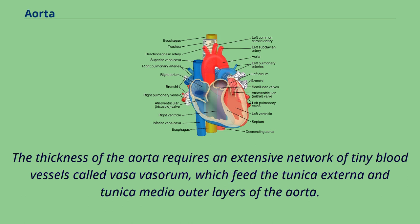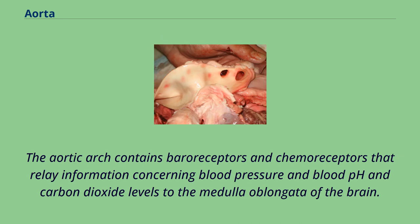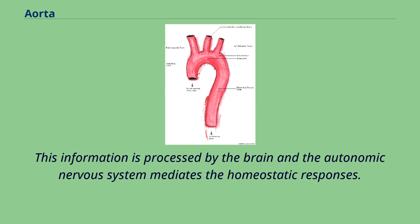The aortic arch contains baroreceptors and chemoreceptors that relay information concerning blood pressure and blood pH and carbon dioxide levels to the medulla oblongata of the brain. This information is processed by the brain and the autonomic nervous system mediates the homeostatic responses.